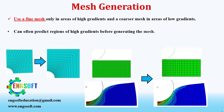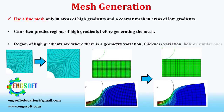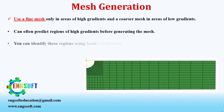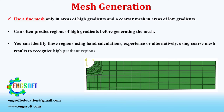You can often predict regions of high gradients before generating the mesh. Regions of high gradients are where there is a geometry variation, thickness variation, hole, or similar features. You can identify these regions using hand calculations, experience, or alternatively, using coarse mesh results to recognize high gradient regions.